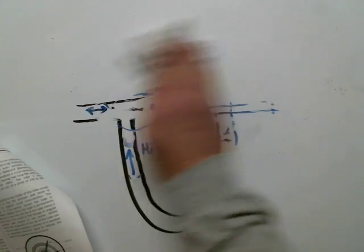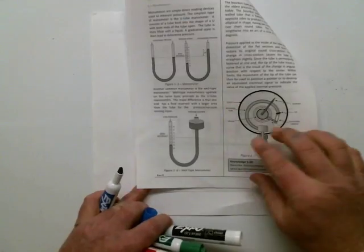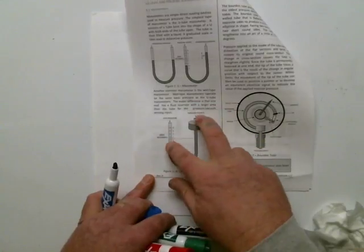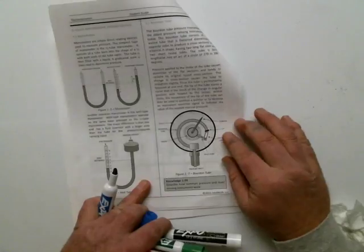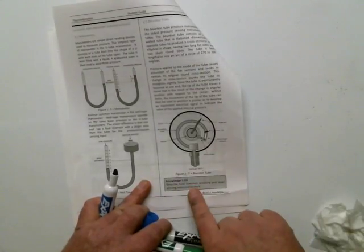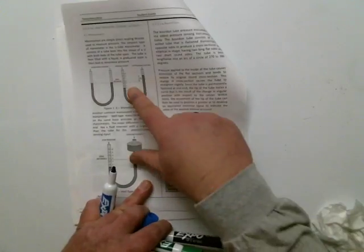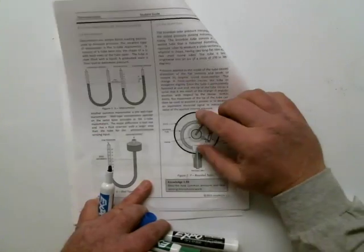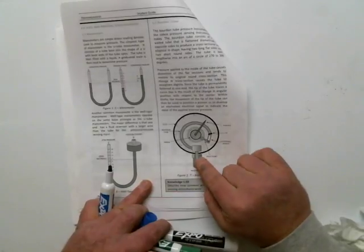Besides manometers, the simplest of the two, you'll see different types of manometers. Here's a well-type manometer — all it does is give us a bigger well at the top. High pressure pushing down, causing a difference in level of the manometer. Here's a Bourdon tube. And here's our knowledge requirement: describe how common pressure and level sensing works. These manometers are the most basic. This Bourdon tube is a wonderful little device, and you see them all over. What's important to recognize is this Bourdon tube will be inserted into a piping system.